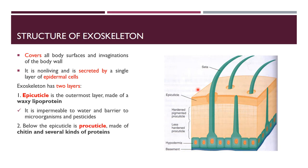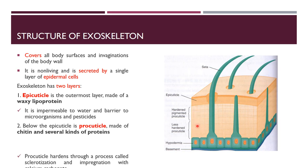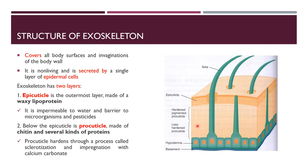The second layer is the procuticle, which is below the epicuticle. Its composition is chitin and different kinds of proteins. The procuticle hardens through a process of sclerotization and impregnation with calcium carbonate, providing rigidity and support to the body externally. The hardening process is called sclerotization, in which the exoskeleton has mineral deposits, specifically calcium carbonate.